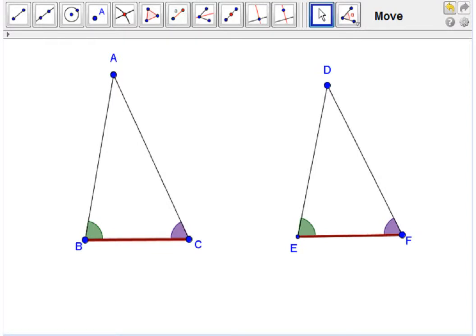This is a proof from Euclid's Elements, Book 1, Proposition 26: The Angle-Side-Angle Congruence Theorem for Triangles.